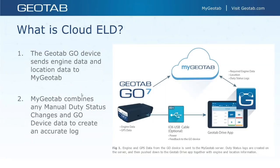Geotab's HOS solution is based upon cloud ELD. The Go device installed in the vehicle communicates with the Geotab Drive app through your MyGeotab database. The Go device sends engine data and location data to MyGeotab, and MyGeotab combines any manual duty status changes made by a driver to create an accurate log — a system of checks and balances between the driver and the Go device collecting data.